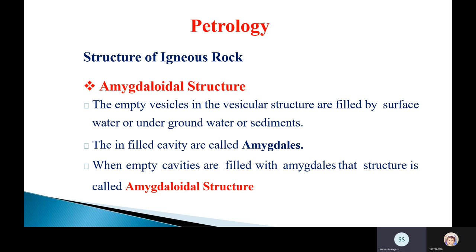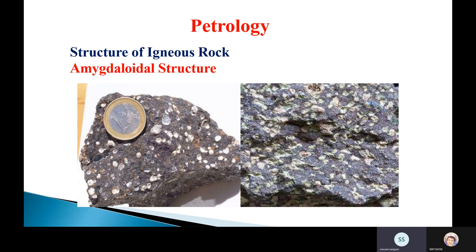The next structure is amygdaloidal structure. The amygdaloidal structure means that the empty vesicles or cavities present in the vesicular structure are filled by surface water, underground water, or sediments. When the gaps or cavities of the vesicular structure are filled with minerals, water, or sediments, the resulting structure is called amygdaloidal structure.